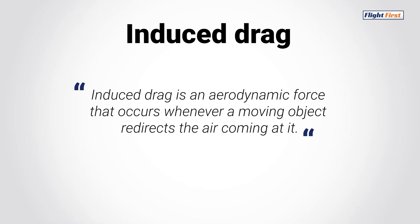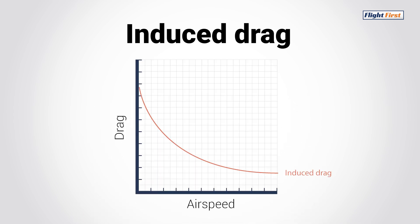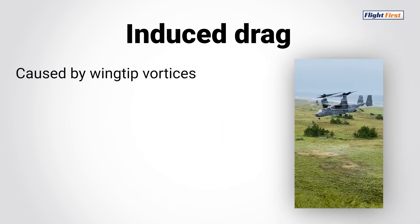Induced drag is an aerodynamic force that occurs whenever a moving object redirects the air coming at it. Induced drag increases as angle of attack is increased and vice versa. It's inversely proportional to the square of the airspeed — if speed is decreased by half, induced drag increases by four. It's a major contributor to performance issues in a hover and is caused mainly by wingtip vortices.